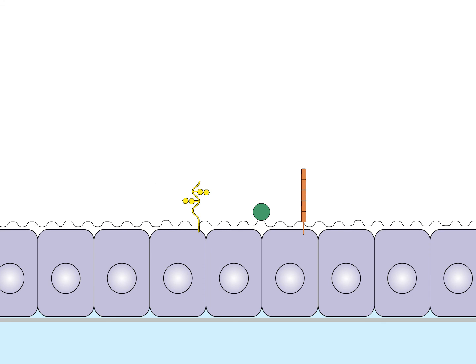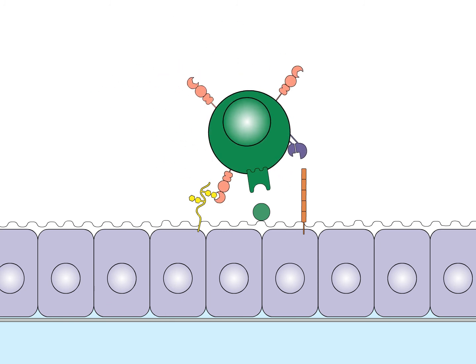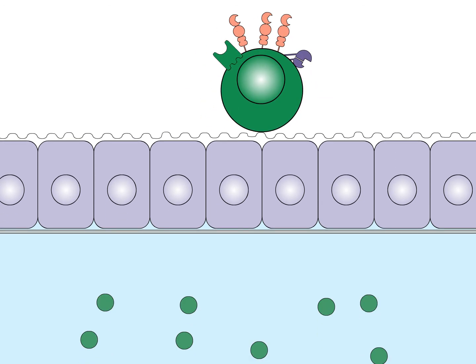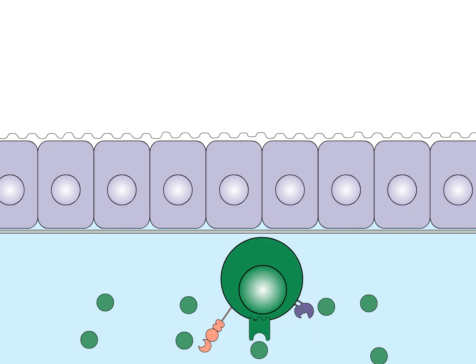The initial binding of the naive T cell to the vascular endothelium is mediated by L-selectin binding to GlyCAM-1. Subsequently, binding of chemokines displayed on the extracellular matrix triggers tight adhesion of the integrin LFA-1 to its ligand ICAM-1. The lymphocyte is then able to migrate across the endothelium and into the T cell area of the lymph node.